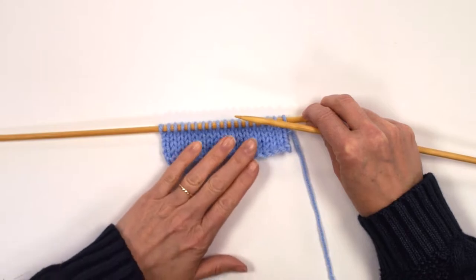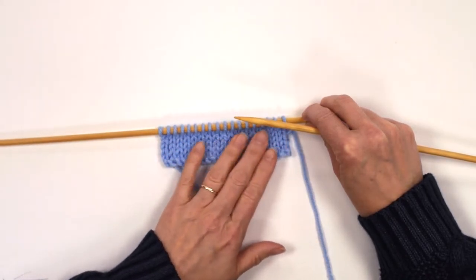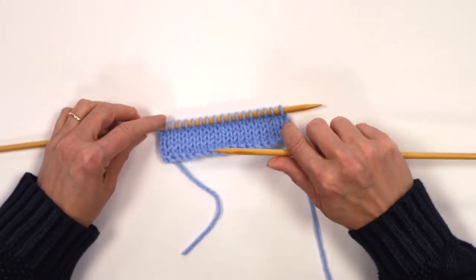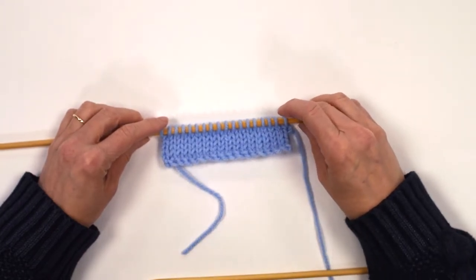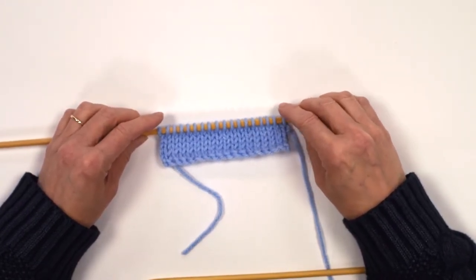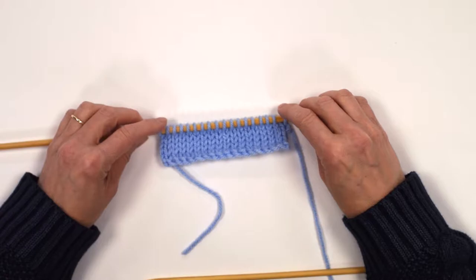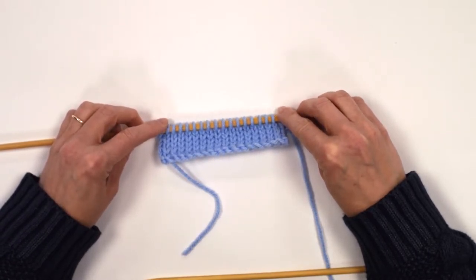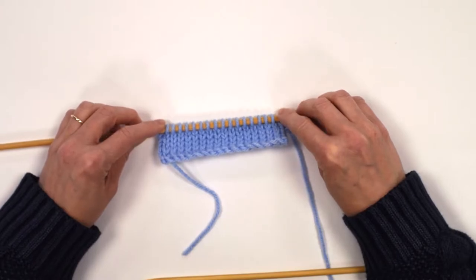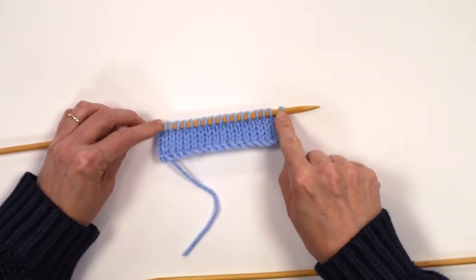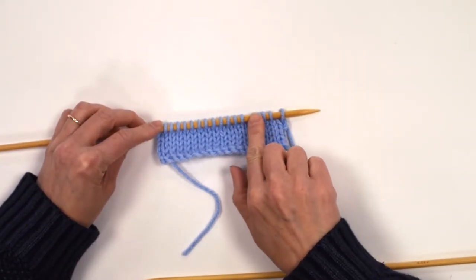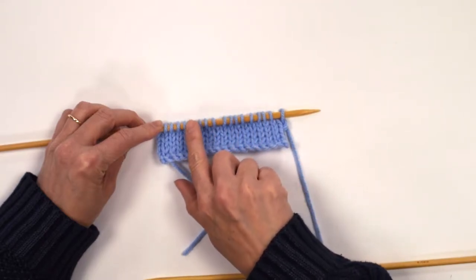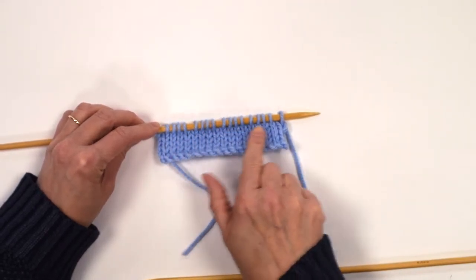So the first row that I'm going to work is a purl row. Often this stitch is worked in sets of four, but you do tend to have one stitch at either end that's not really included—it's more there for sewing up afterwards. So I've got a stitch at either end and then I've got four, four, four, and four there, so they're in sets.